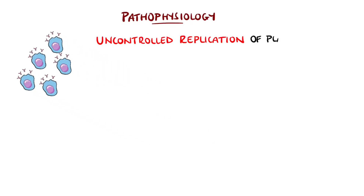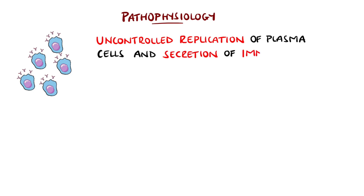Any class of immunoglobulin can be produced, but most commonly it is IgG, followed by IgA.